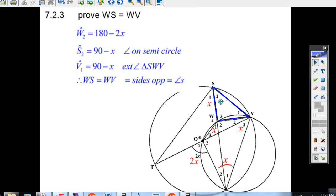Well, that means that S2 must be 90 minus x for this to be 90 degrees, angles on a semicircle. So I can just say S2 has to be 90 minus x because of an angle on a semicircle.